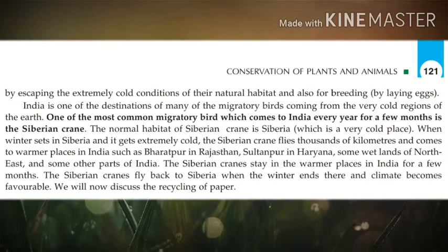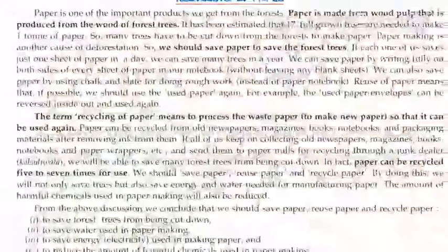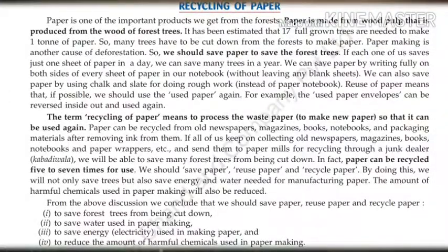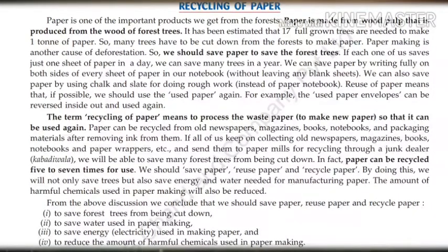Now let us discuss the recycling of paper, which is a very important topic. Paper is one of the most important products we get from the forest. Paper is made from wood pulp produced from the wood of forest trees. It has been estimated that 17 full-grown trees are needed to make one ton of paper, so paper making is another cause of deforestation.